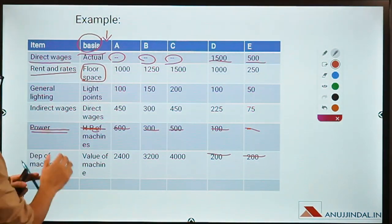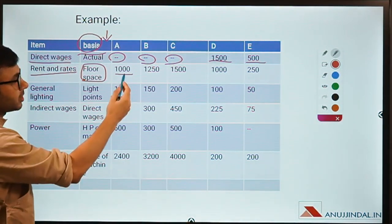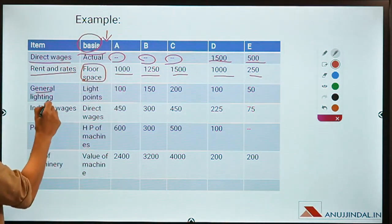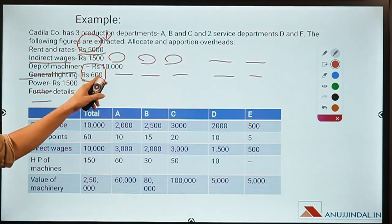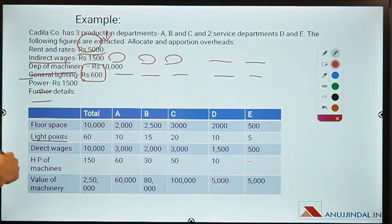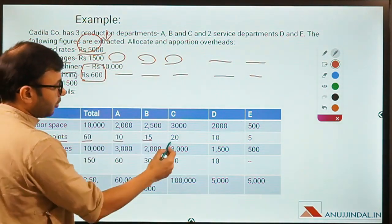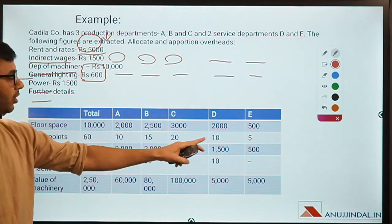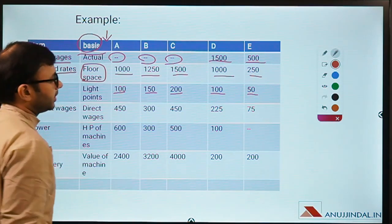Floor space allocation: 1000 goes to department A since 20% of 5000 is 1000. Similarly the rest of the allocation is based on floor space proportion. Next is general lighting — the expenditure here is 600. What will be the basis of allocation for lighting? Light points. The allocation is: total 60 light points split as 10, 15, 20, 10, and 5 for each department respectively. This gives us the basis for allocating general lighting.